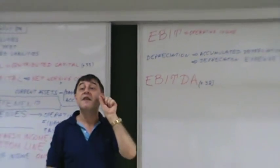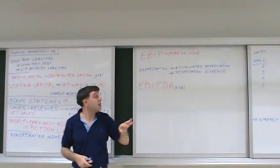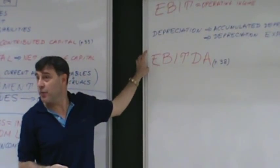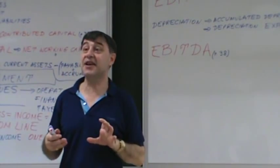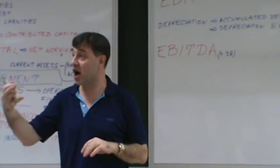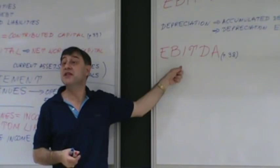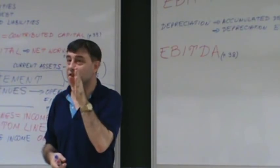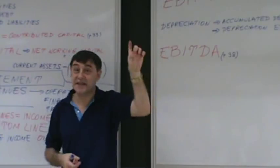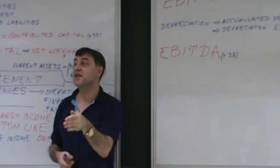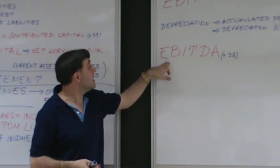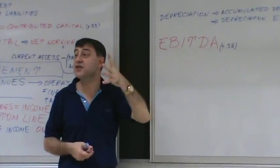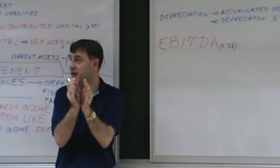Financial analysts loved EBITDA during the dot-com and telecom boom. We now understand it's not exactly perfect — it has some problems — but the key is to understand what EBITDA means: what it includes and what it excludes. It excludes interest, taxes, depreciation, and amortization — those four important elements are not included in EBITDA.